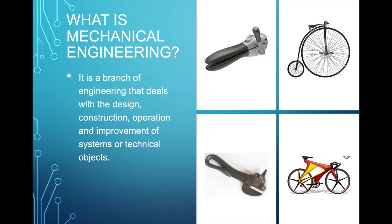So what is mechanical engineering? It's a branch of engineering that deals with the design, construction, operation, and improvement of systems or technical objects. We have two examples here. Example number one, we have a can opener. Well, this would have been an old style opener, right?